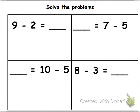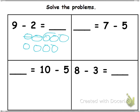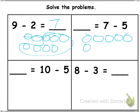9 minus 2. You draw the whole, which in this case is 9. Take away 2. Circle the rest. There's 7 left. This one: 7 minus 5. 7 is the whole. Take away 5. How many is left? 2.